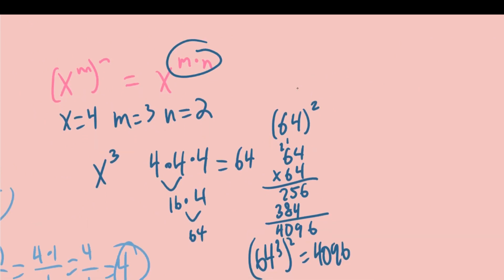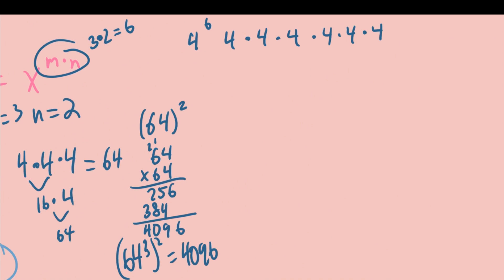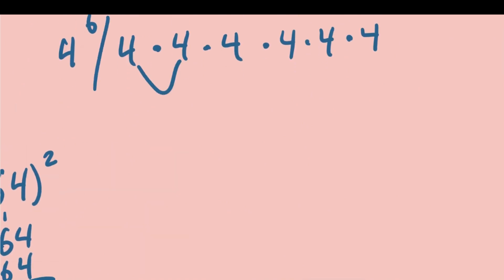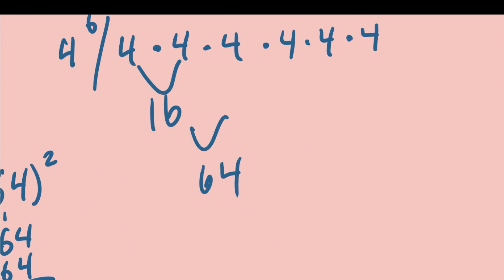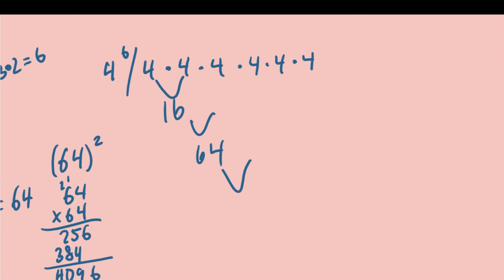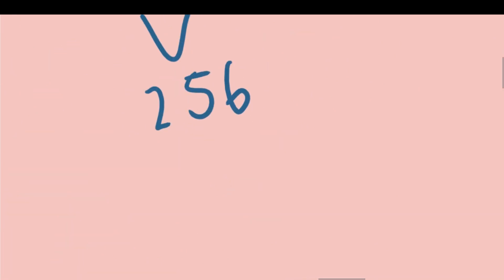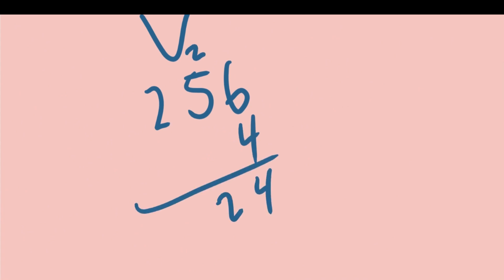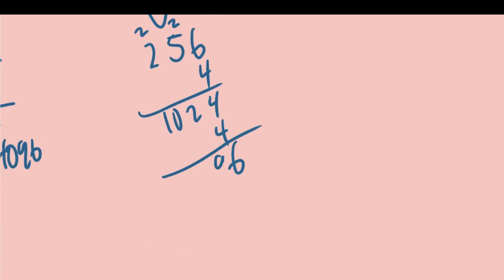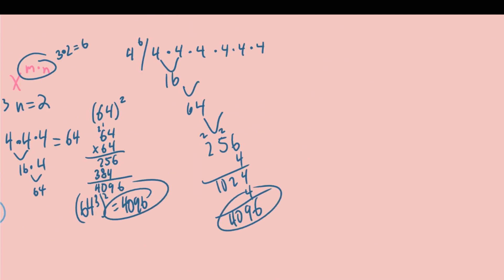Now let's verify using the property. 3 times 2 equals 6, so let's try 4 to the 6th power: 4 times 4 times 4 times 4 times 4 times 4. Working through: 16, 64, 256, 1,024, and 1,024 times 4 is 4,096. We got the same answer, proving the power property to be true.